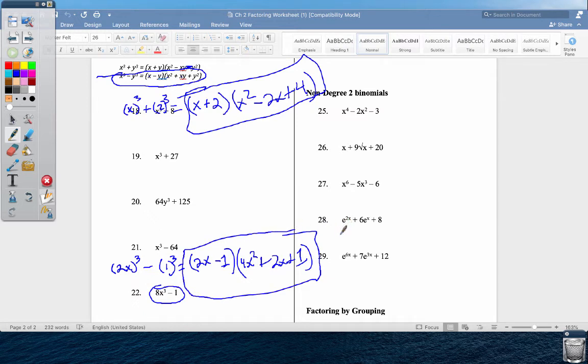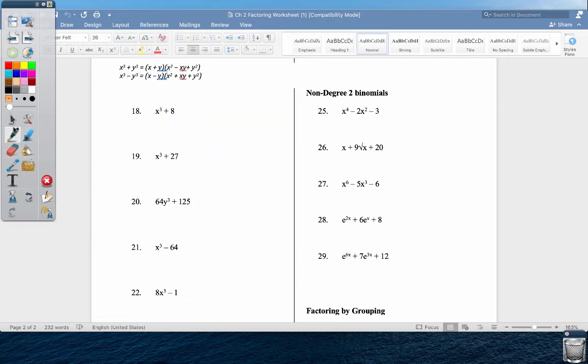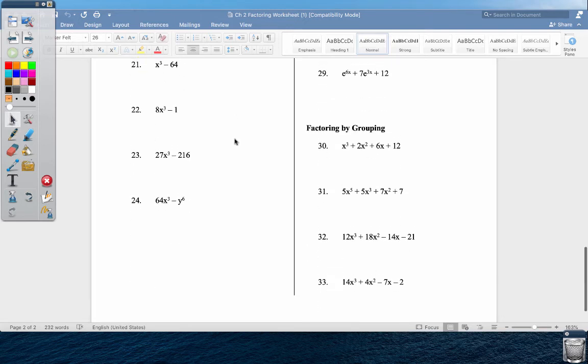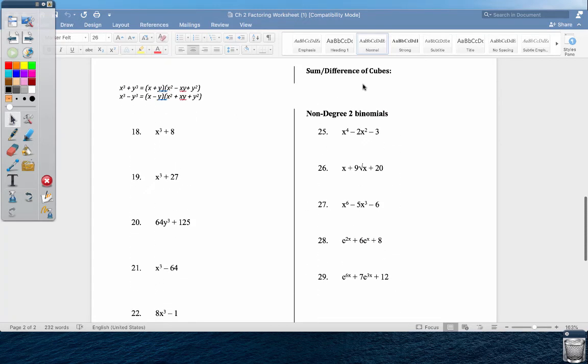A difference of two cubes and sum of two cubes. So for this one you'll have 4y, it replaces the first term, plus 5 replaces the second term, and then you'll use the top equation and go from there. Those are all the cubes over here.